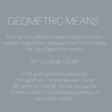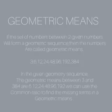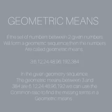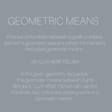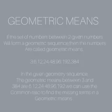Geometric Means. The set of numbers between two given numbers will form a geometric sequence — then those numbers are called geometric means. For example, in the geometric sequence 6, 12, 24, 48, 96, 192, and 384, the geometric means between 6 and 384 are 12, 24, 48, 96, and 192. We can use the common ratio to find missing terms and geometric means.